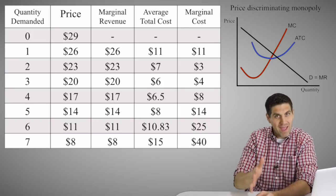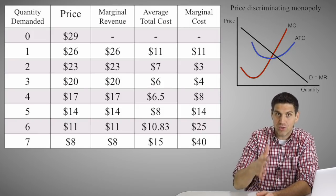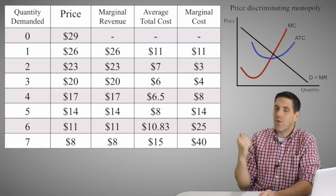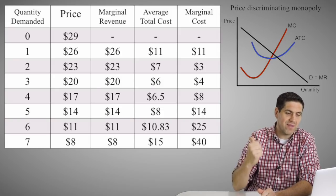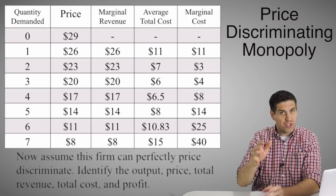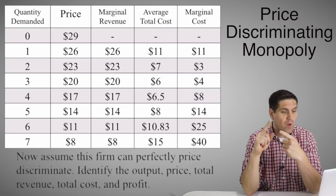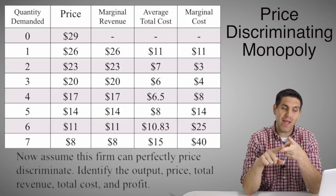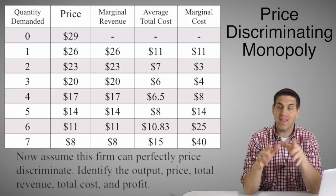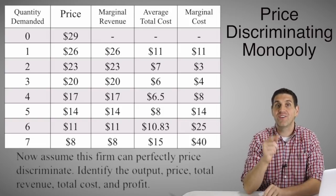For a perfectly price-discriminating monopoly, the demand curve equals the marginal revenue curve. The marginal revenues are: $26, $23, $20, $17, $14, $11, and $8. If this is a price-discriminating monopoly, figure out the output, the price, total revenue, total cost, and profit. Pause the video and see if you got it.